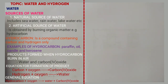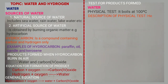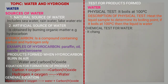Now test for the product formed — water. Physical test for water: it boils at 100 degrees Celsius. Now if we are told to describe the test for water, it will say: boil a sample of water to determine its boiling point. If it boils at 100 degrees Celsius, then the liquid is water.